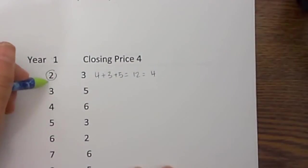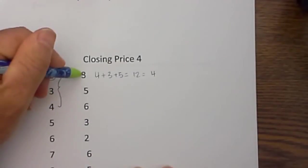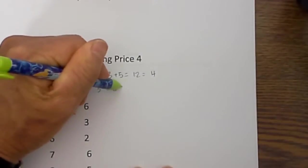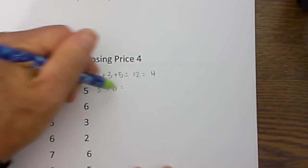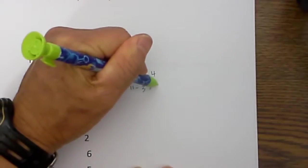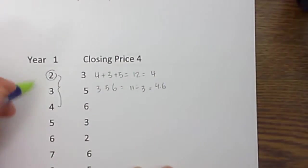Now for year 3, I will use 3, 5, and 6. When you add those together that gives you 11, and 11 divided by 3 equals 4.6.